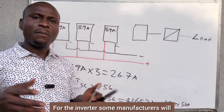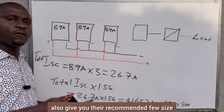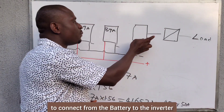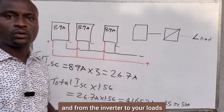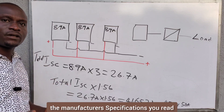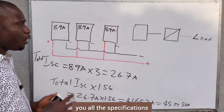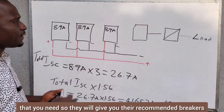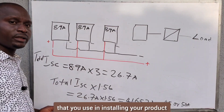For the inverter, some manufacturers will also give you their recommended fuse size, breaker size, and cable sizes you should use to connect from the battery to the inverter and from the inverter to your loads. That is why it is always good to look at the manufacturer's specifications — read the manual, and they will give you all the specifications you need, including their recommended breakers, fuses, and cables for installing your product.